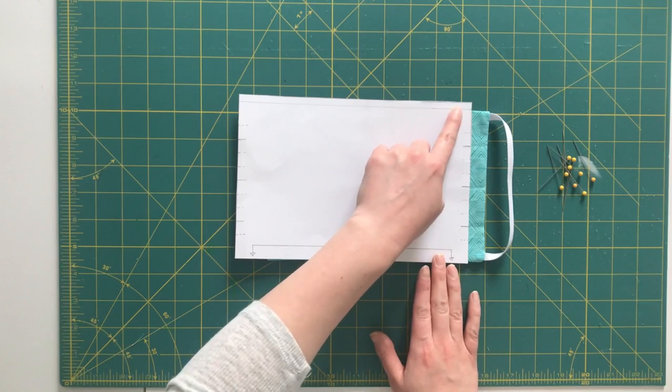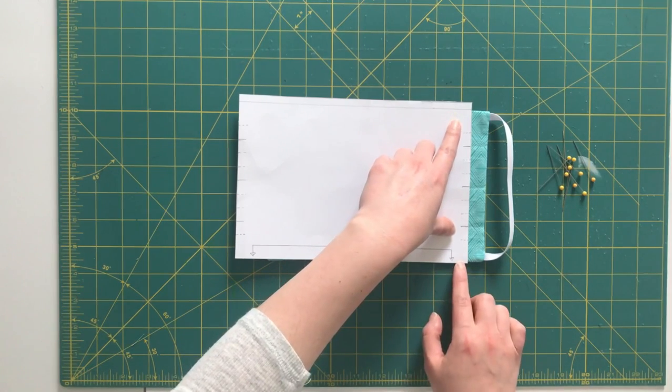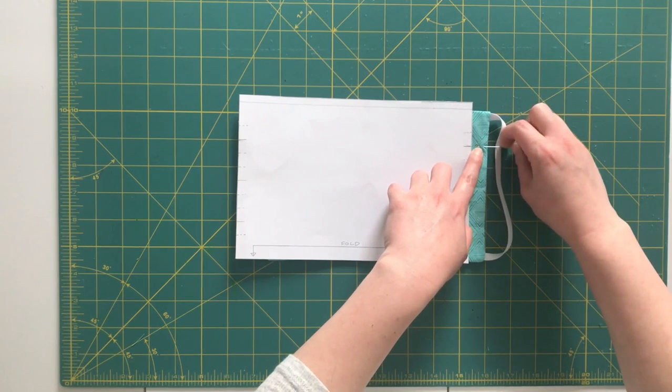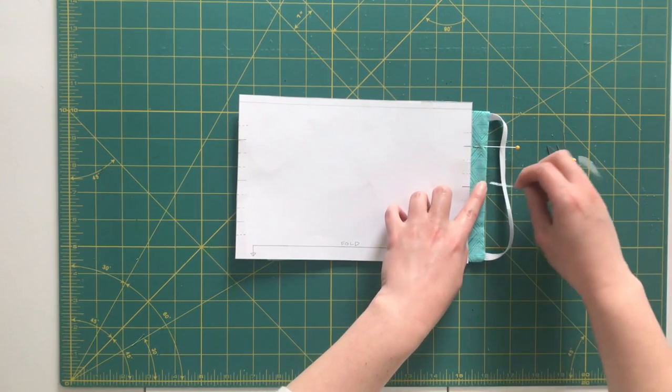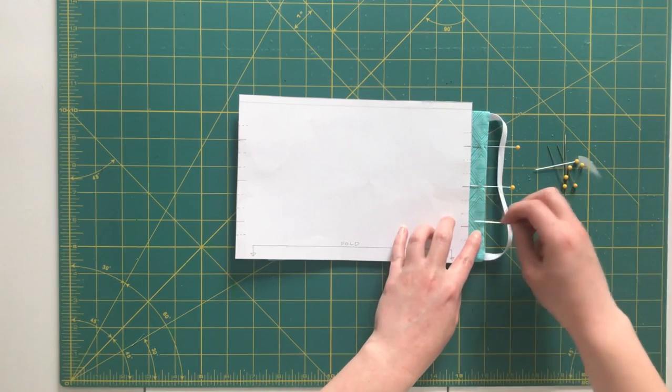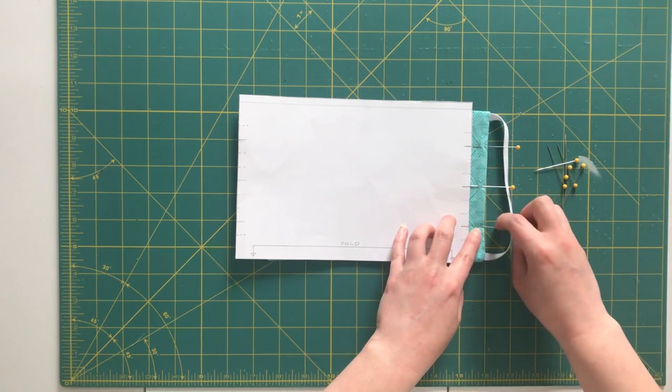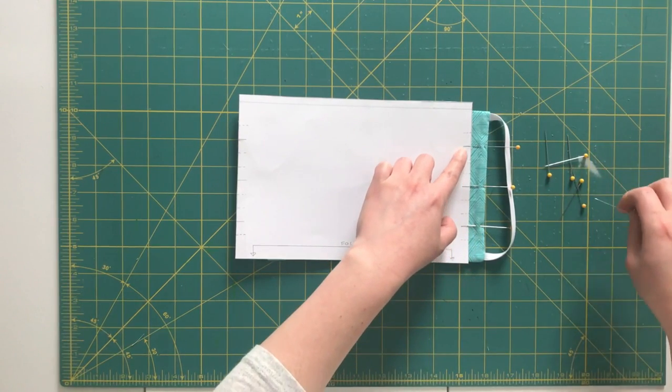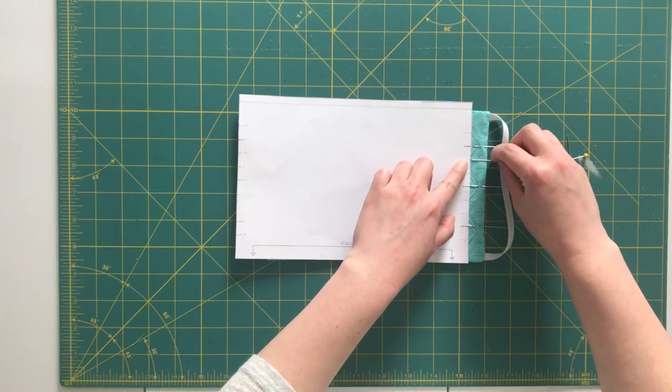So I'm lining up my seam allowance line and my folded line here. And I'm going to mark the center of the pleat. I'm also going to mark the bottom of each pleat.